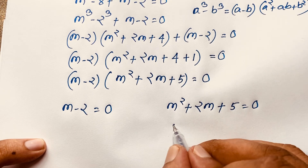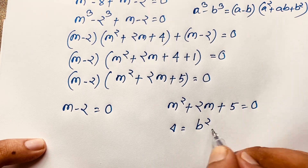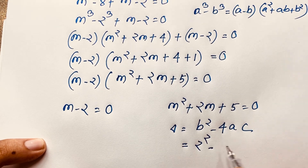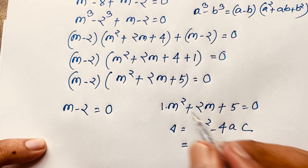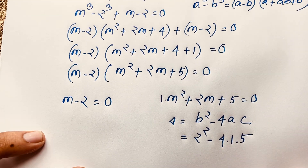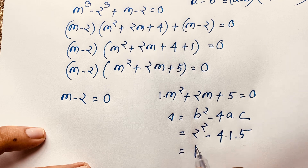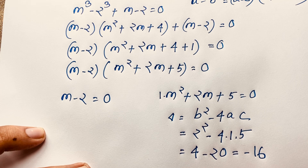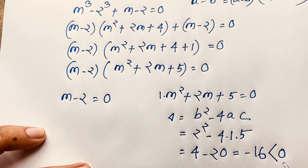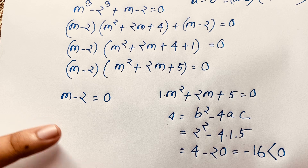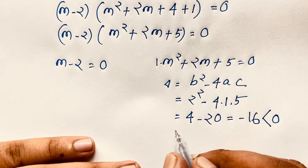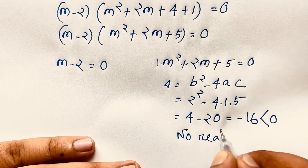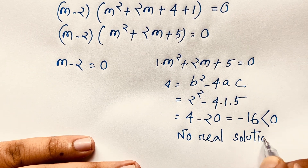For the second case I calculate the discriminant: delta equals b² minus 4ac. Here b is 2, a is 1, c is 5. So delta equals 2² minus 4 times 1 times 5 equals 4 minus 20 equals negative 16. Since delta is less than 0, this gives complex solutions — no real solution.